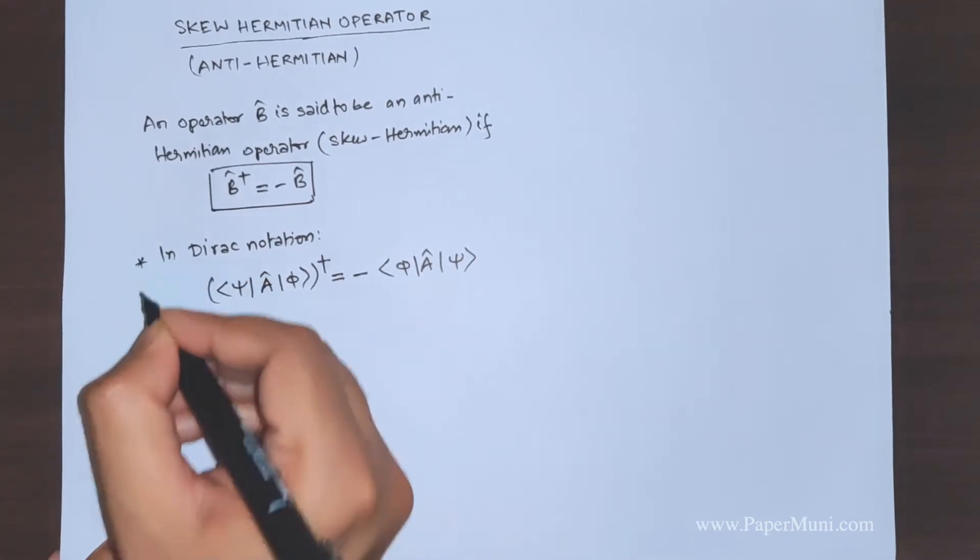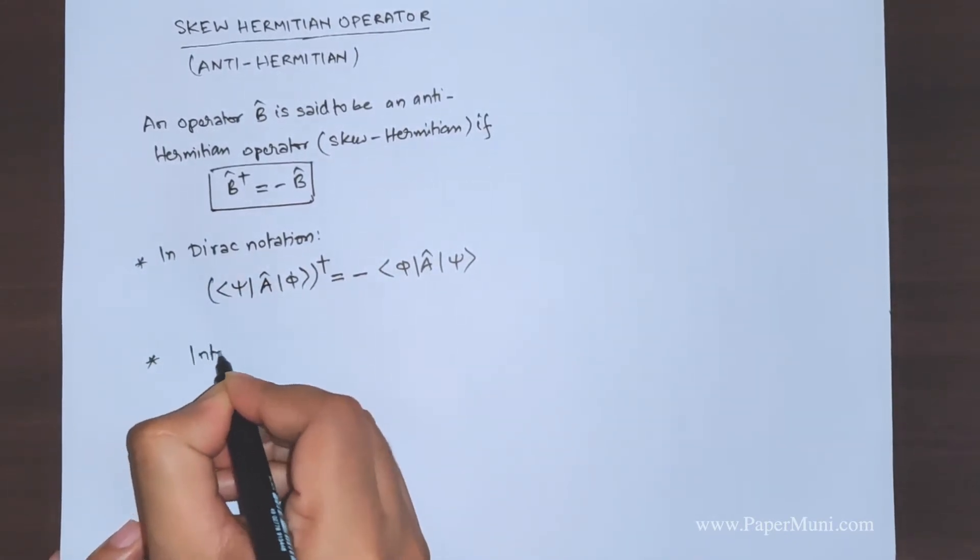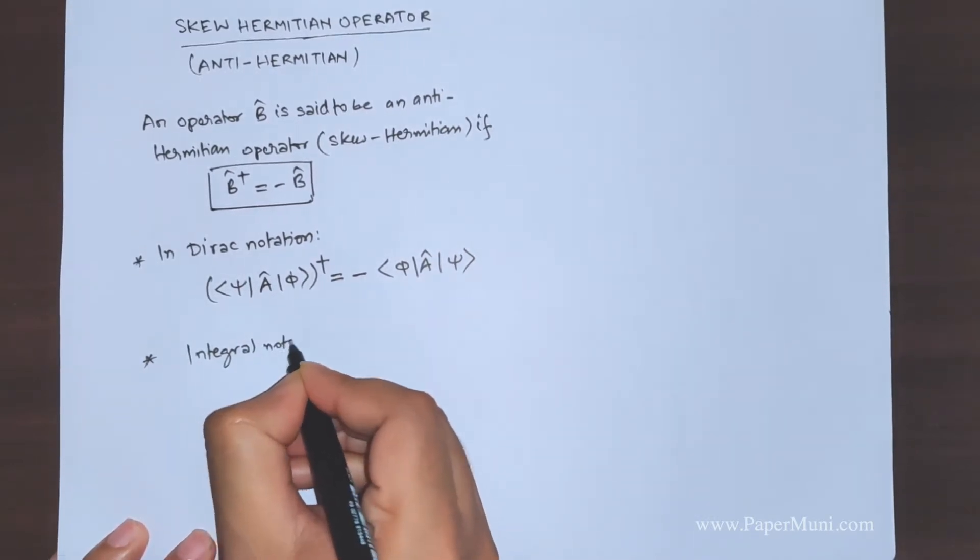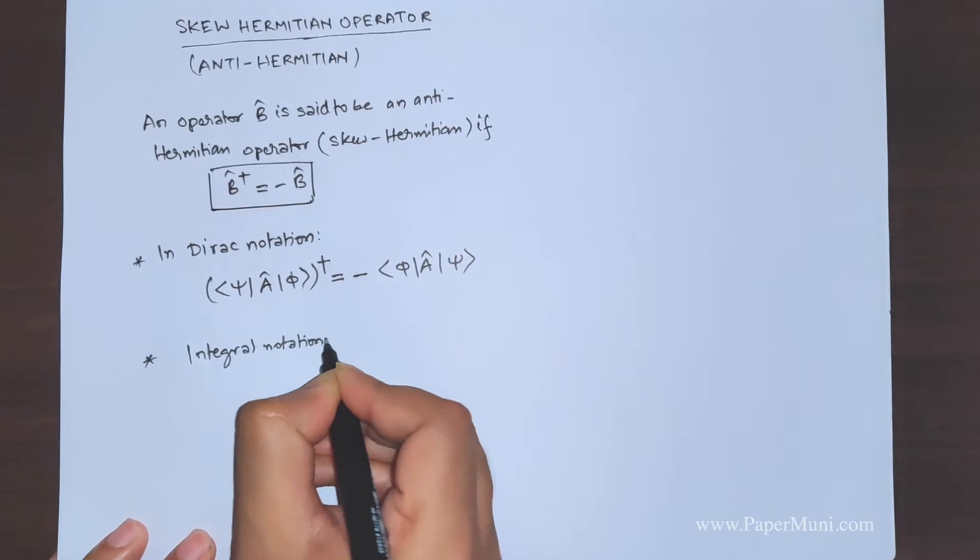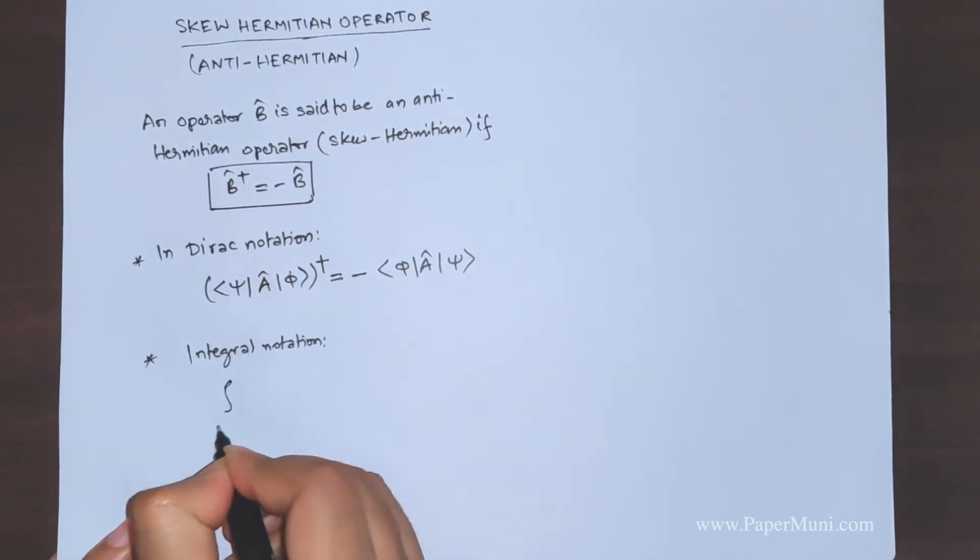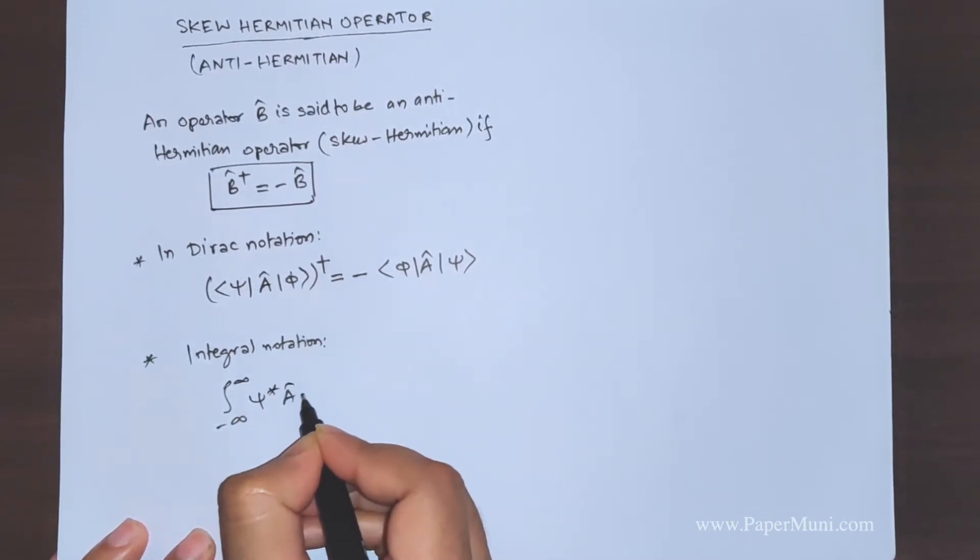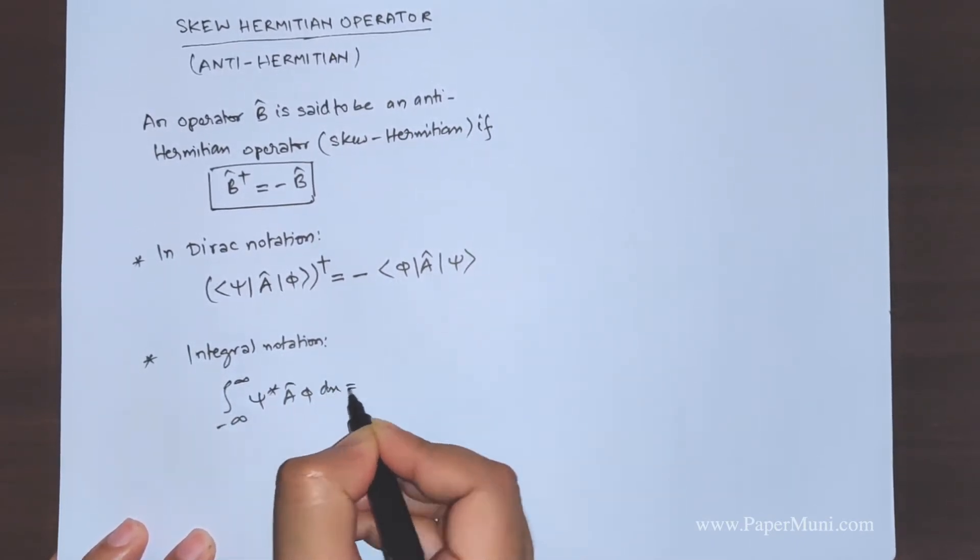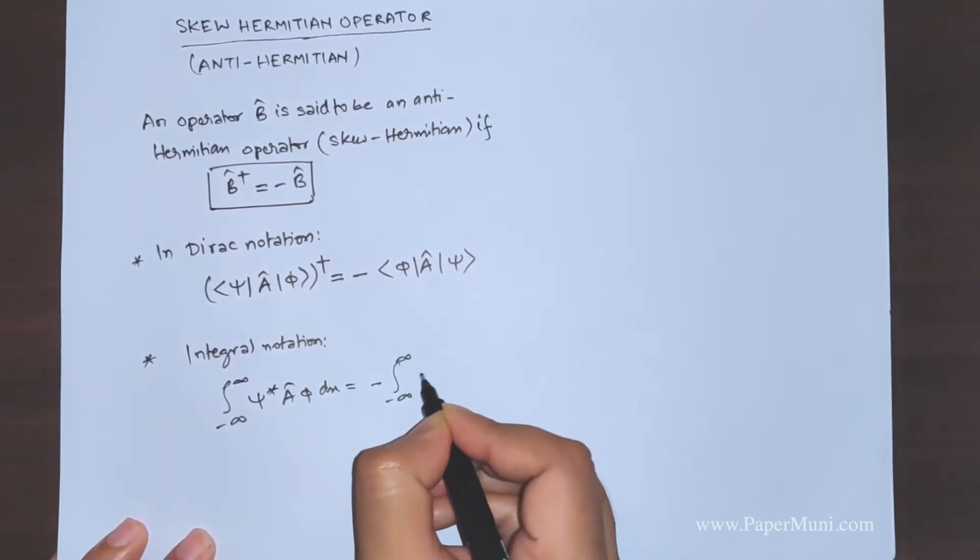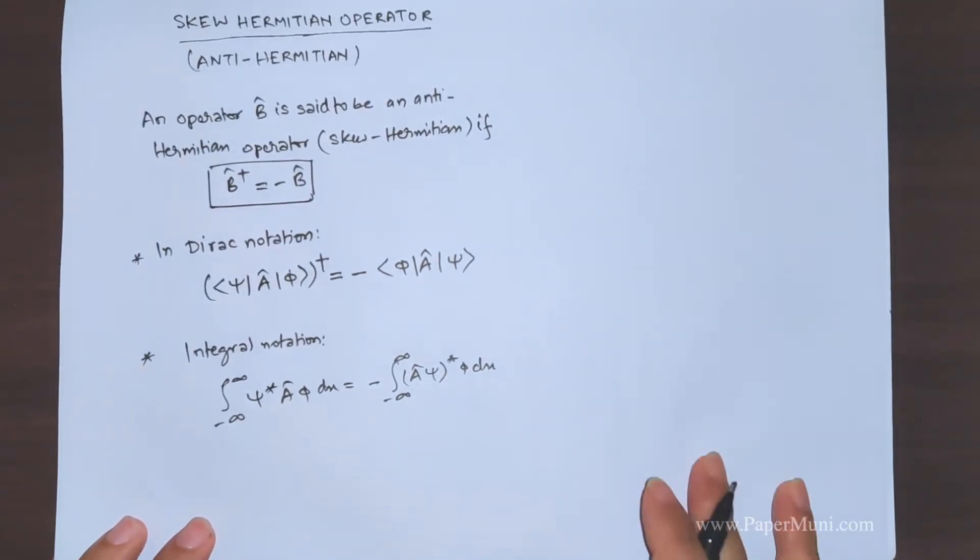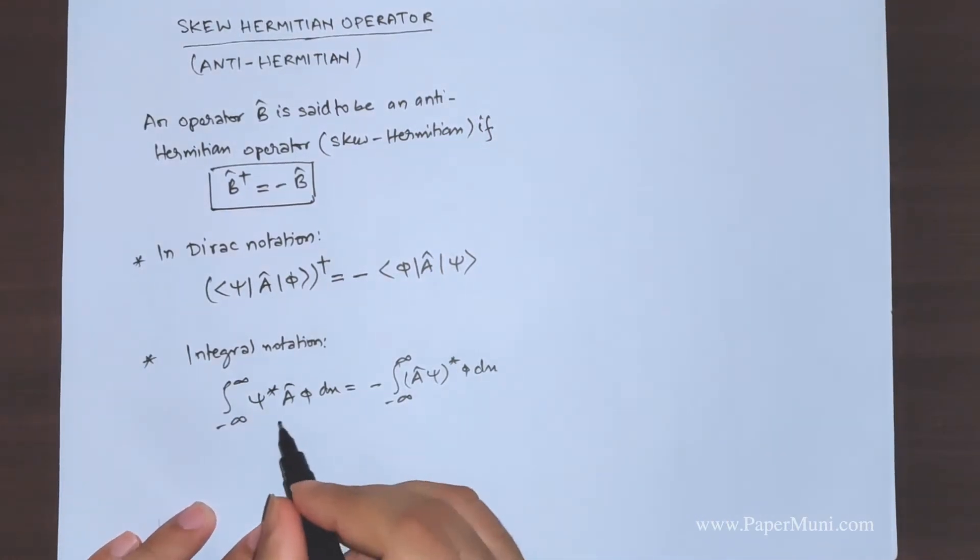Next one is the integral notation of the same condition. Minus infinity to plus infinity psi star A phi dx should be equal to minus infinity to plus infinity A psi star phi dx. So this is the integral notation for this condition.